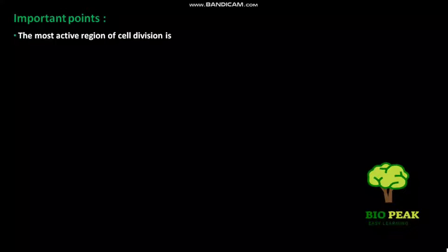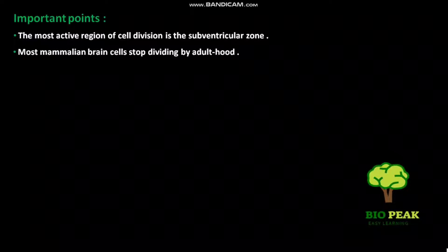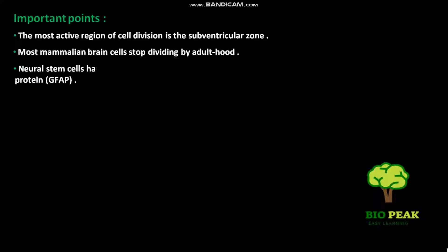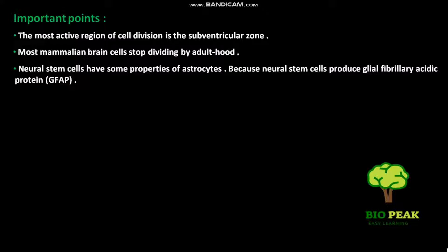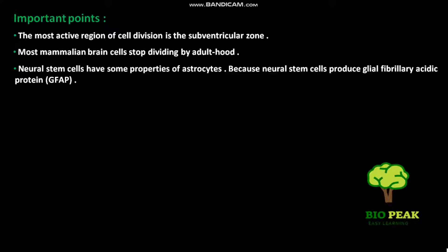Now some important points. The most active region of stem cell division is the subventricular zone. Most mammalian brain cells stop dividing by adulthood. Neural stem cells have some properties of astrocytes because neural stem cells produce glial fibrillary acidic protein, or GFAP.